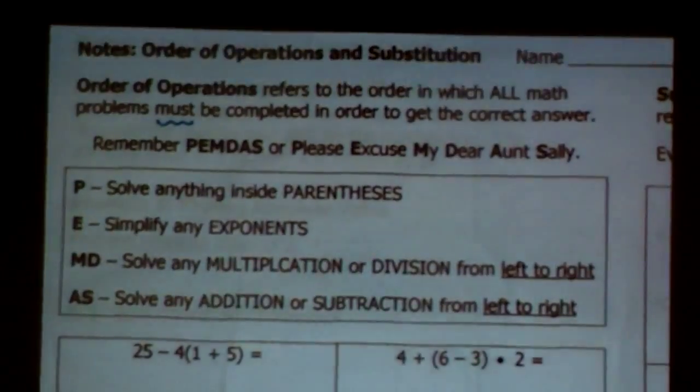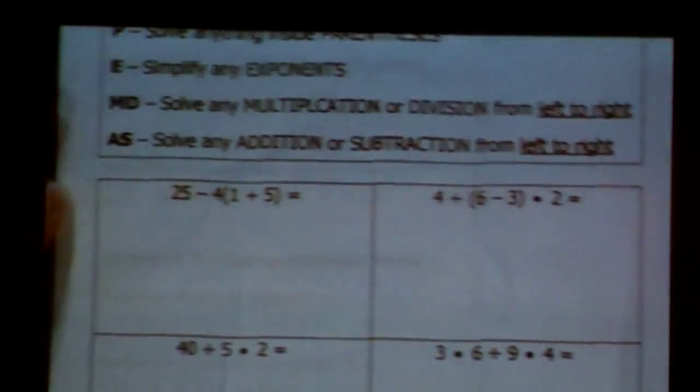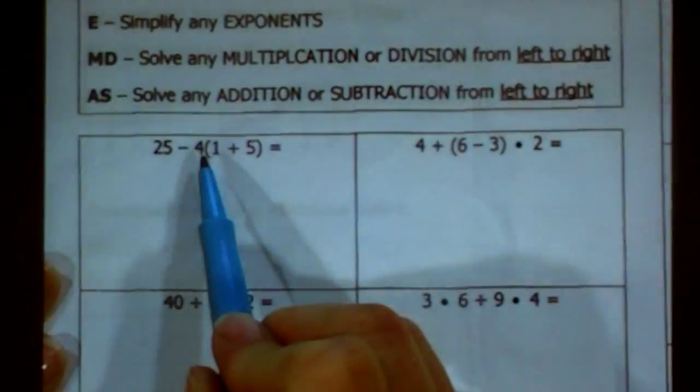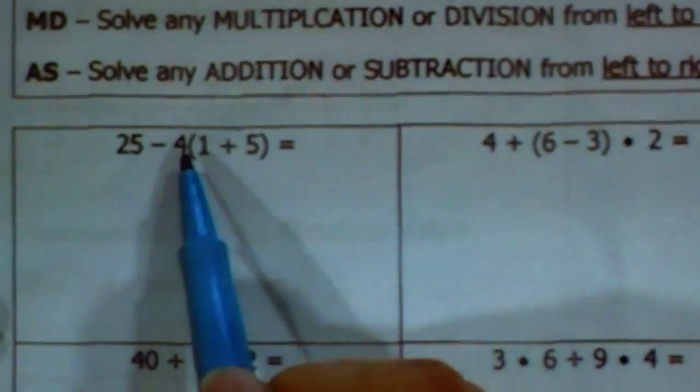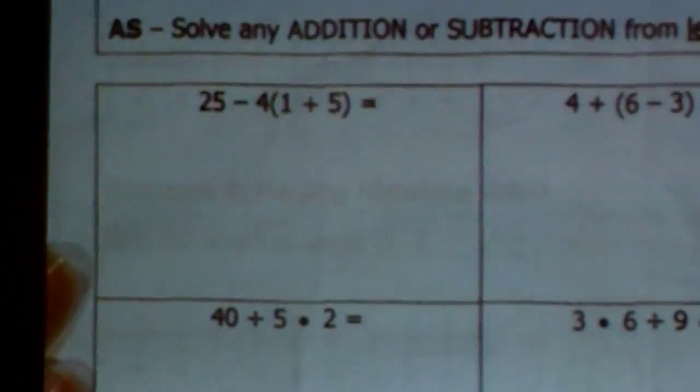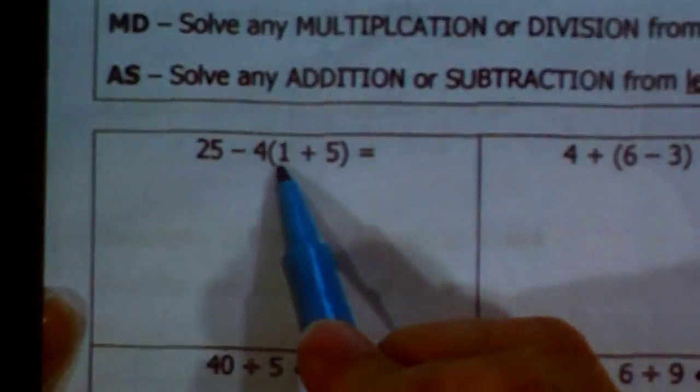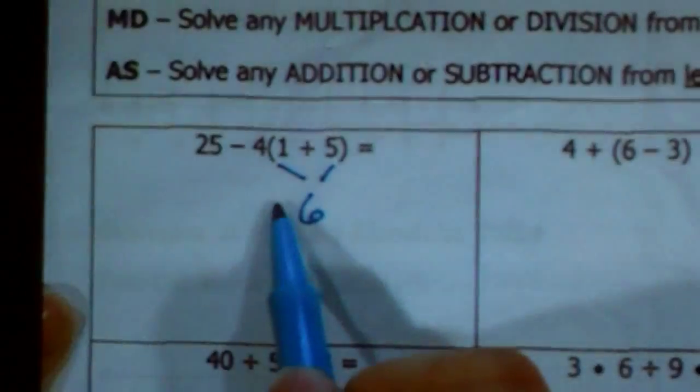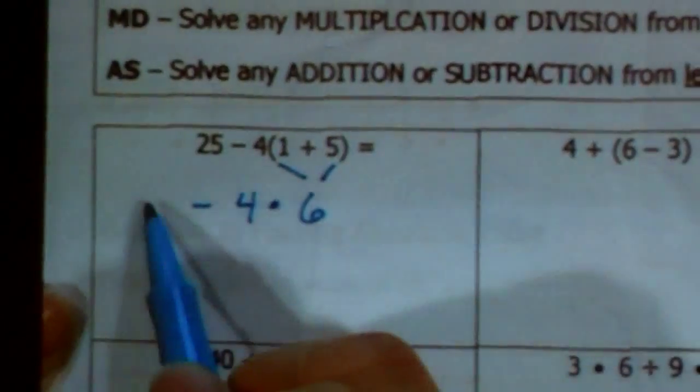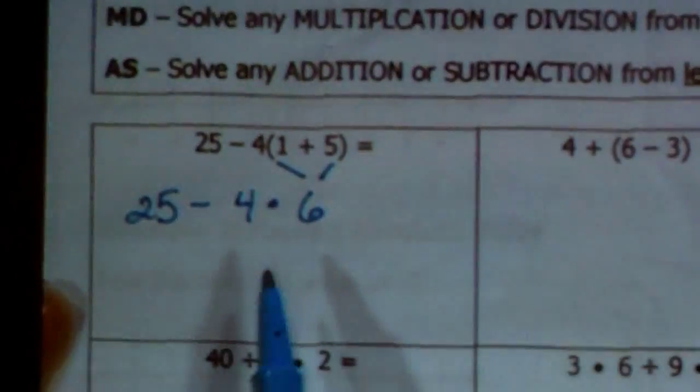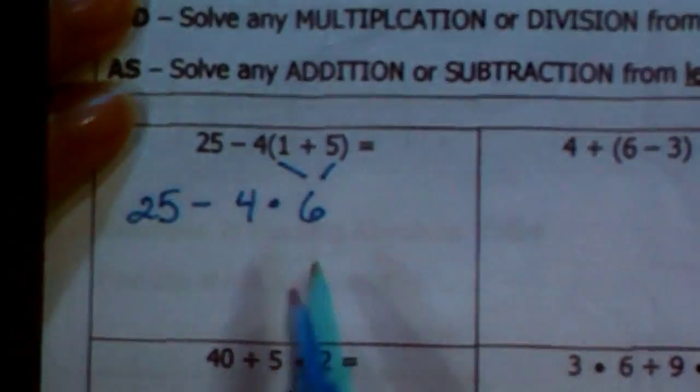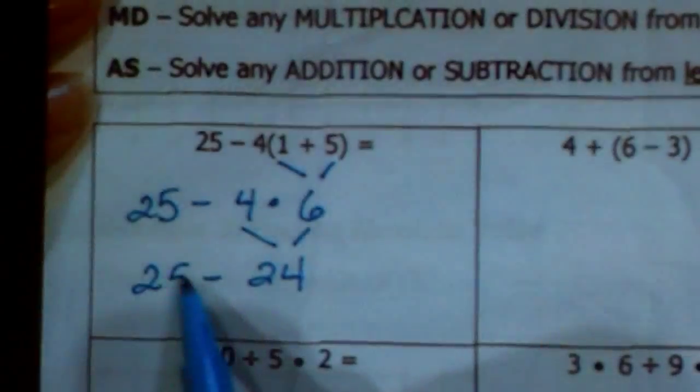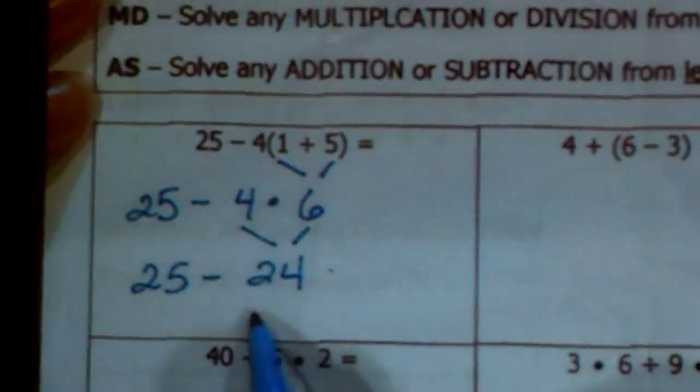Okay, so here we have our first example. We have 25 minus 4(1 + 5). If there's no symbol between the 4 and the parentheses, that means that there's multiplication right there. So following our order of operations, we know we have to do parentheses first, so we're going to take care of that. This gives me 6. I'm going to plug in now a multiplication symbol. I'm just rewriting everything. Now I have subtraction and multiplication. You should recognize that we're going to multiply first. This makes 24. And we're going to subtract that from 25. So 25 minus 24 is 1.